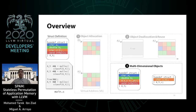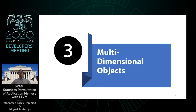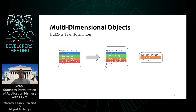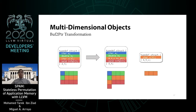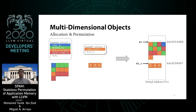A natural question to ask is how we handle multi-dimensional objects — those that contain arrays or buffers. The fact that multi-dimensional objects share the same base allocation address means they use the same permutation, which could allow an attacker to overflow from one internal buffer to another undetected. To handle this, we separate these multi-dimensional objects into two distinct objects. This reduces intra-object memory safety into an inter-object problem. We call this transformation buff-to-pointer, as intra-object buffers are replaced with pointers to new independent allocations, allowing each to be independently permuted.